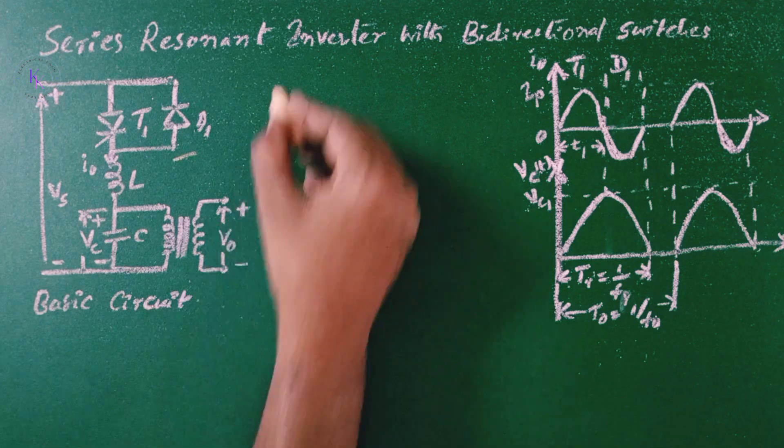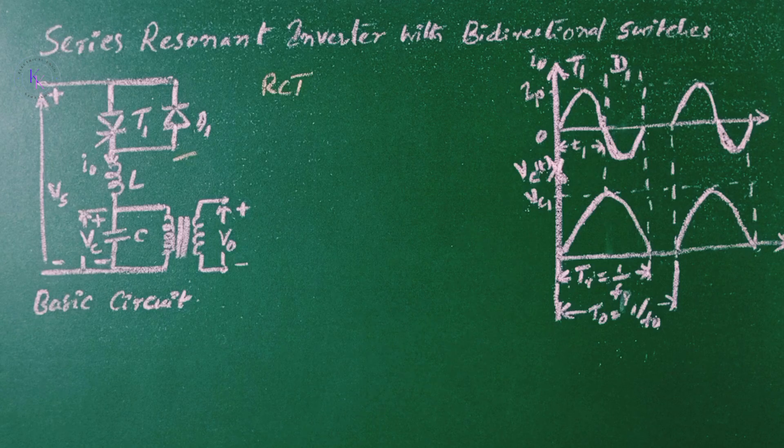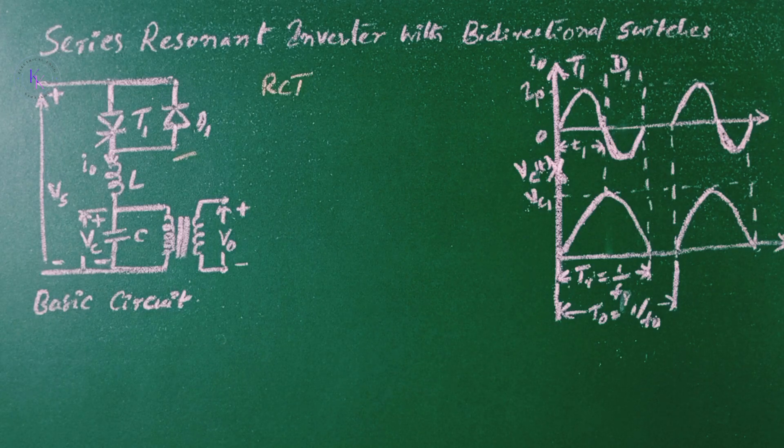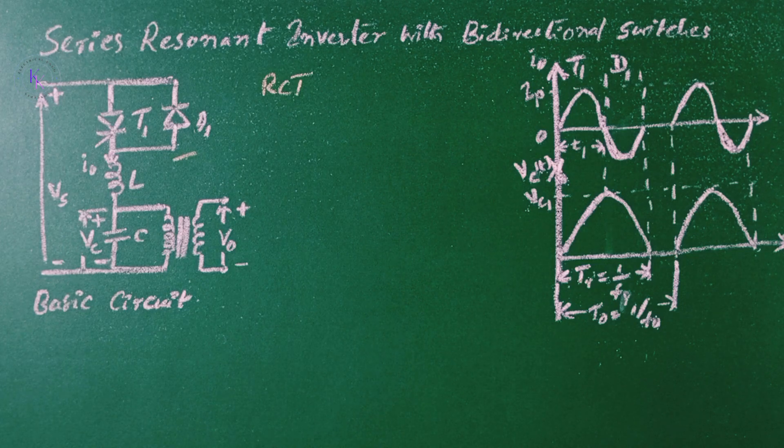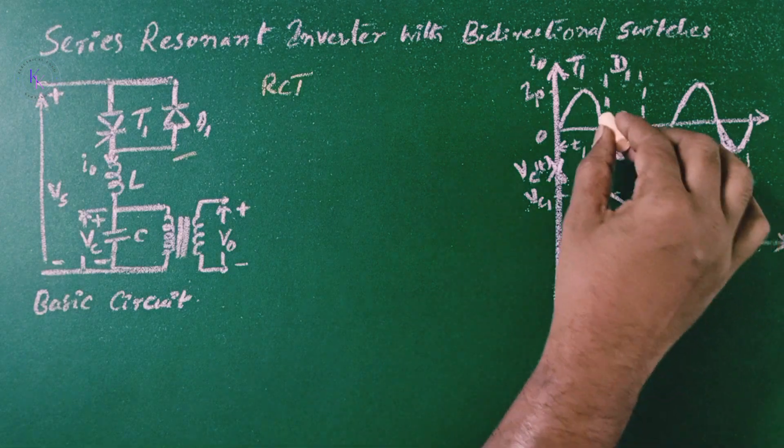a reverse conducting thyristor, that is RCT, is normally used. RCTs are ideal for series resonant inverter. When the thyristor T1 is fired, a resonant pulse of current flows and T1 is self-commutated at T equals to T1.